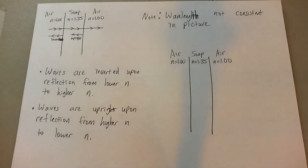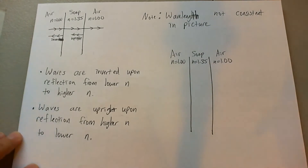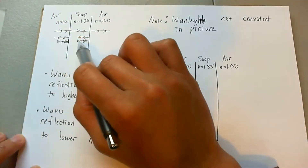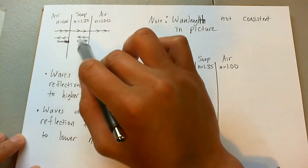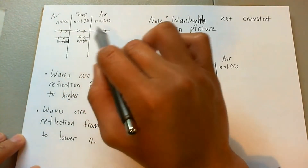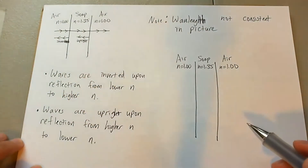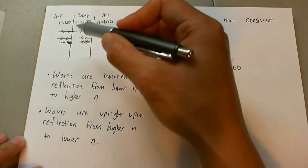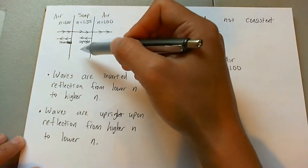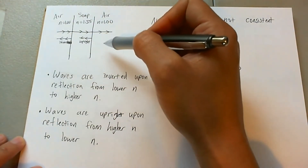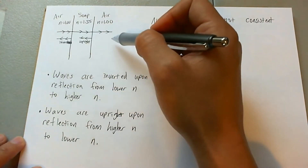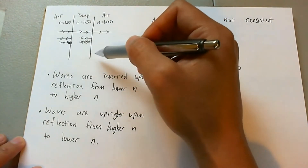This problem might look a lot like the previous problem except with one minor difference. In the previous problem, you went from air to some sort of optical coating to glass, which each had a higher index of refraction than the former. Now in this case, you have a soap border, but on both sides of it you have air, which are both lower indices of refraction than the soap border itself.